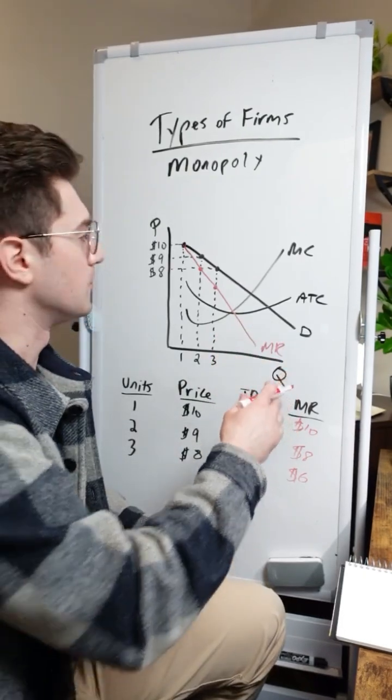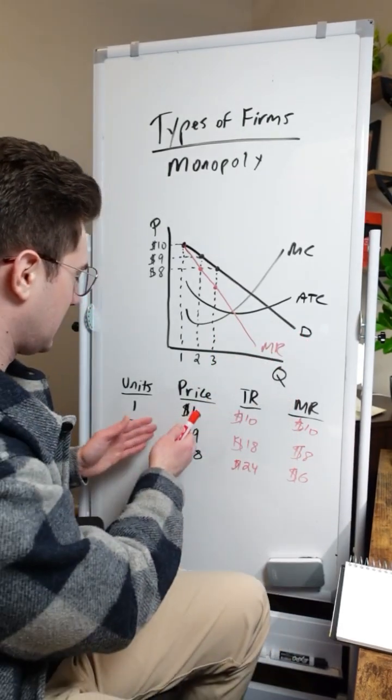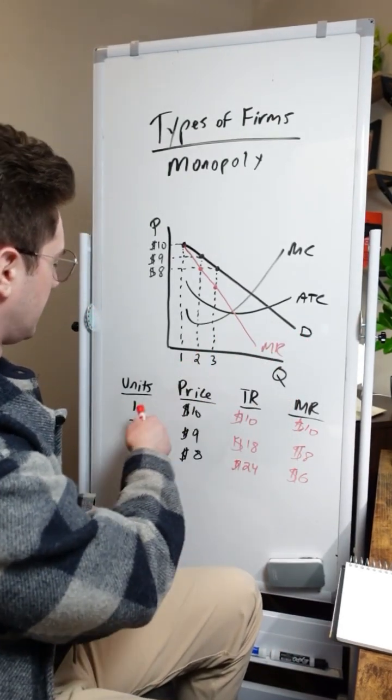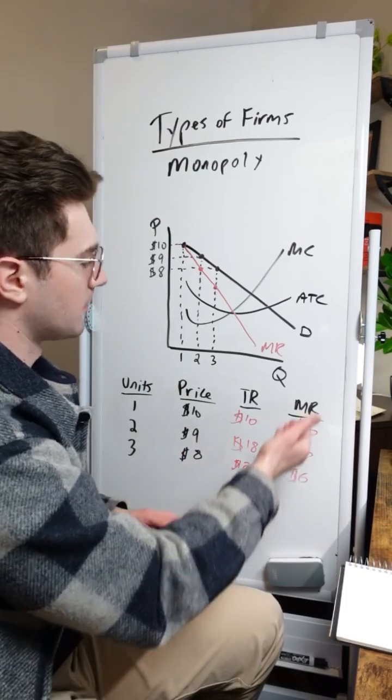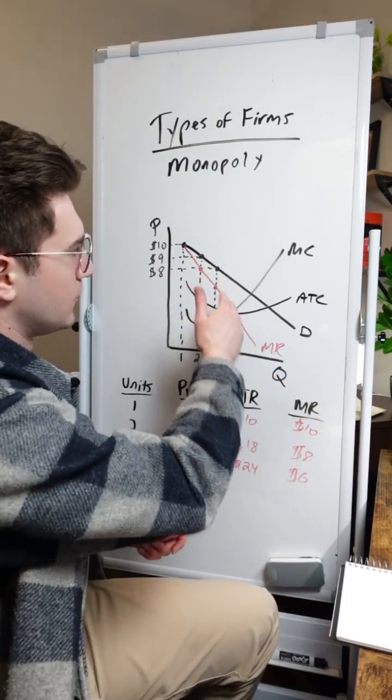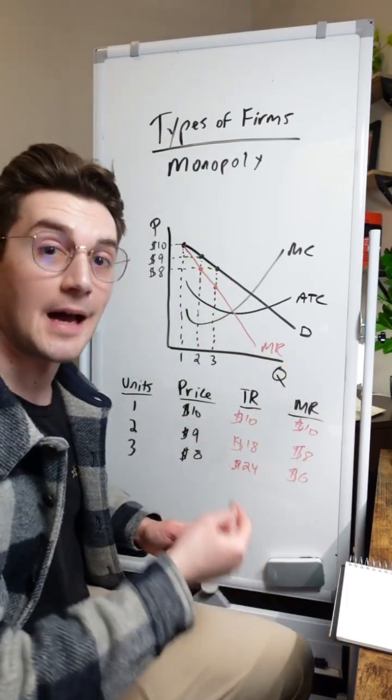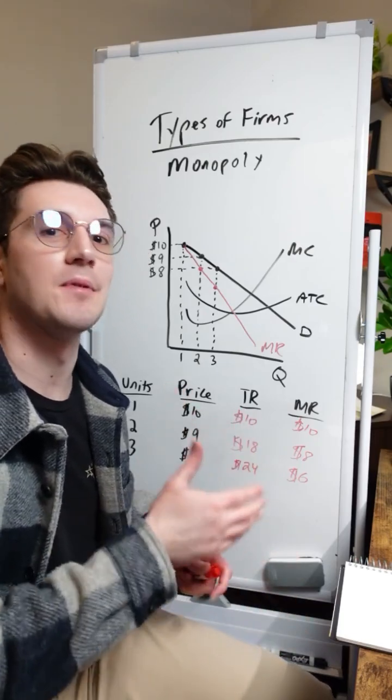Oh sorry. It's the slope times two of the demand curve. And that's just because of the multiplication going on here when we compute the units times price. The marginal revenue curve just drops two times as fast as the demand curve. And it's not horizontal because monopolies are price makers.